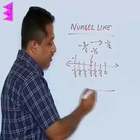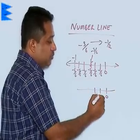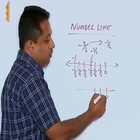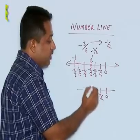In that case, the plotting would have been 0. Then, we are going to divide into two portions. This would have become minus 1 upon 2 and this would have become minus 2 upon 2, that is minus 1.